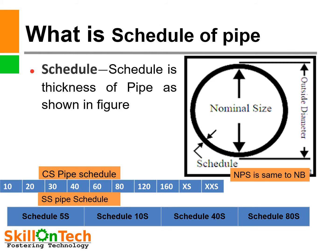What is schedule of pipe? We must know about schedule because it is very important. Schedule is the thickness of pipe, as shown in the figure. Pipes are available in various schedules. CS pipe schedules are available in schedule 10, 20, 30, 40, 60, 80, 120, 160, extra strong, and extra extra strong. As schedule increases, the thickness of the pipe increases.